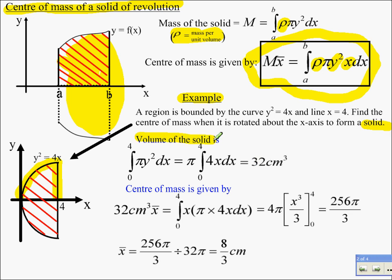The volume of the solid, firstly, is just pi y squared dx. So pi y squared dx. Y squared is 4x between the limits of 0 and 4 because that's what we've got along here. And I integrate that, put 4 and 0 in and get 32 centimeters cubed.